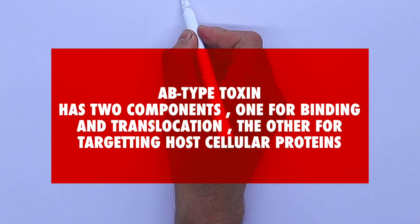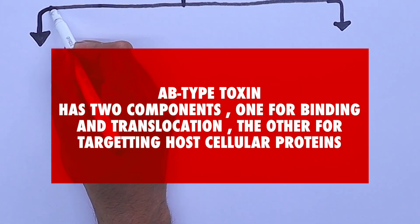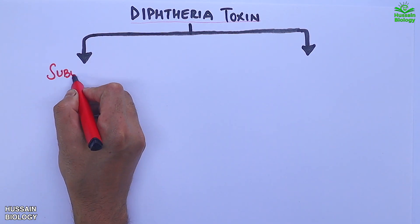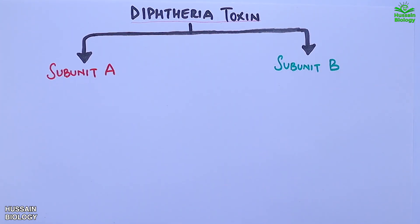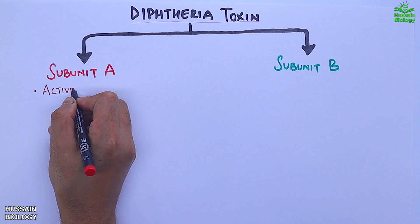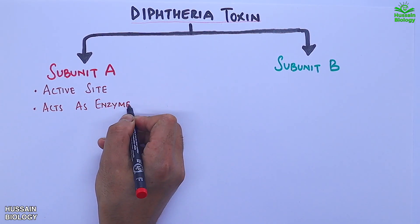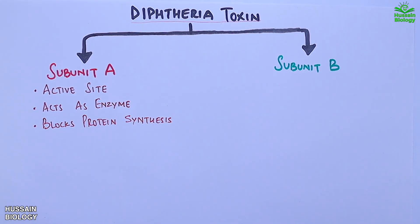Moving towards the structure of diphtheria toxin: it is a type of AB toxin that has two components or subunits — subunit A and subunit B. Subunit A is the active component of the AB toxin; it acts as an enzyme and blocks protein synthesis.